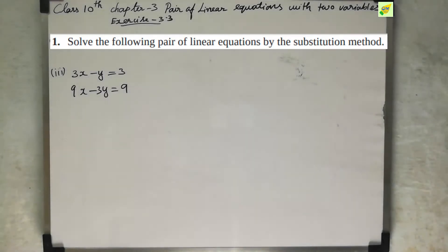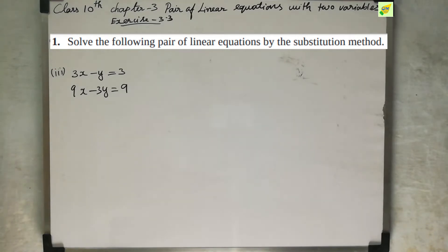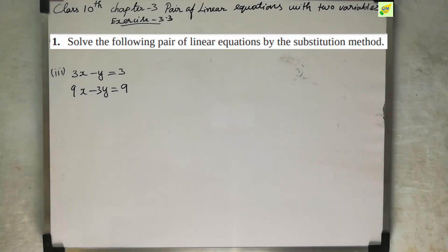Hi students. I am going to cover Class 10 NCERT CBSE syllabus Chapter 3, Pair of Linear Equations with Two Variables, Exercise 3.3, first sum, third subdivision. We will solve it using the substitution method.